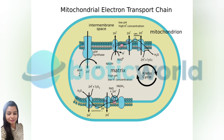After the ETC, all the protons pumped across the membrane create the electrochemical potential needed for ATP synthesis. ATP synthase converts this potential into ATP, which the cell uses for nearly all its functions. The process also produces water as a byproduct, when oxygen combines with electrons and protons.